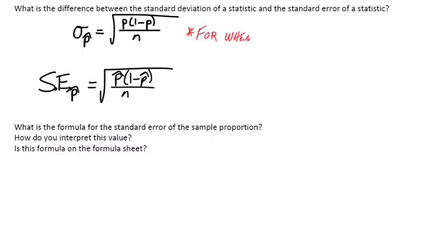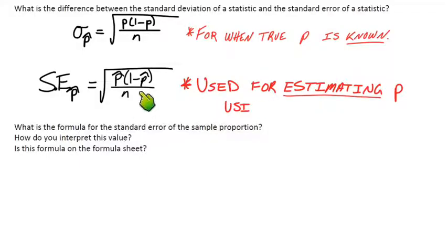So we would use this one in Chapter 7, the standard deviation formula for when the true p is actually known. And then for when p is unknown, we'll use this formula. In other words, this formula is used for estimating what p is using p-hat.